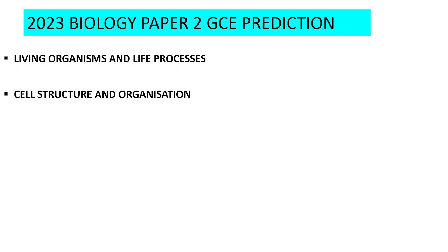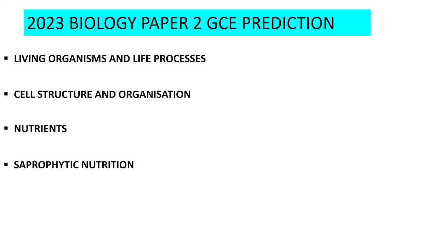The second topic is Cell Structure and Organisation. This topic also has a high probability of coming in the exam because, checking from 2015 to 2022, questions have been coming often from it — meaning it's a topic that regularly appears. The next topic is Nutrients, which has come up just twice from 2015 to 2022, so I expect a question from it this year.